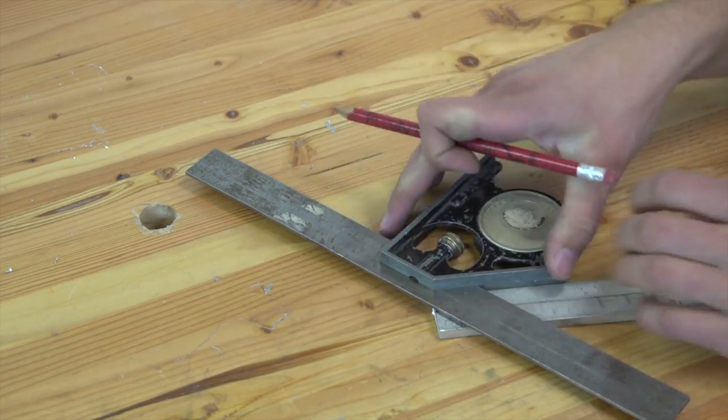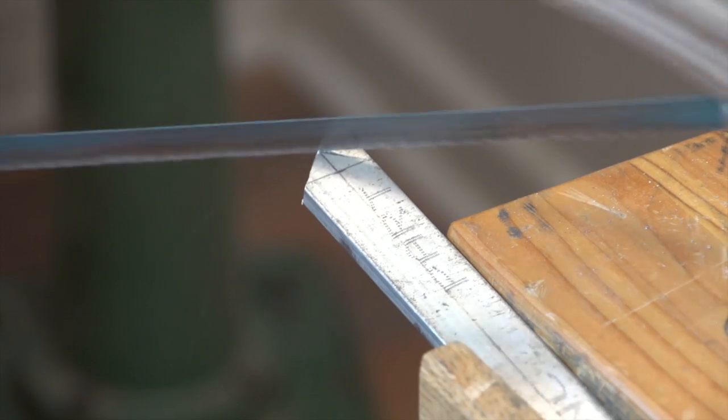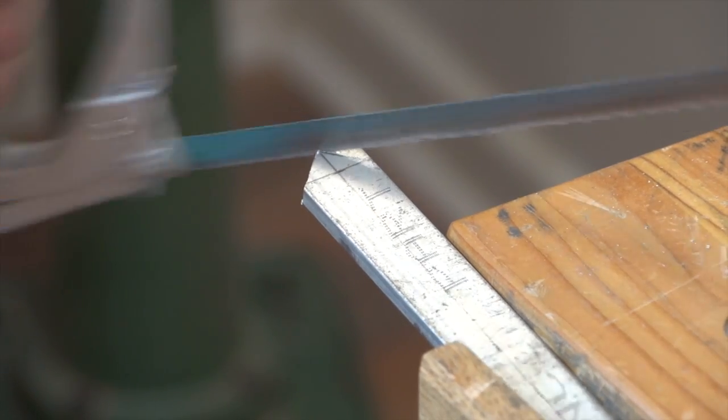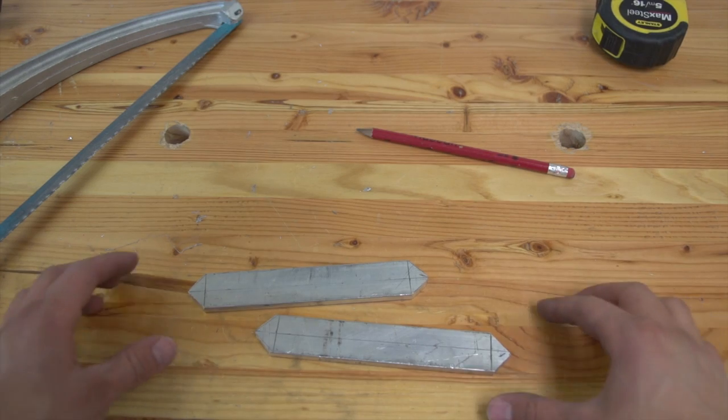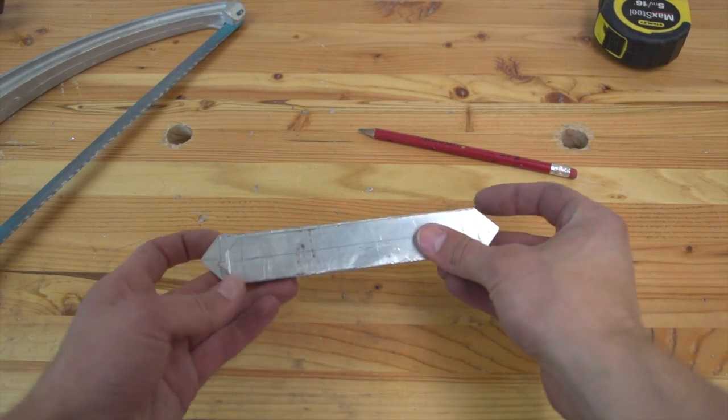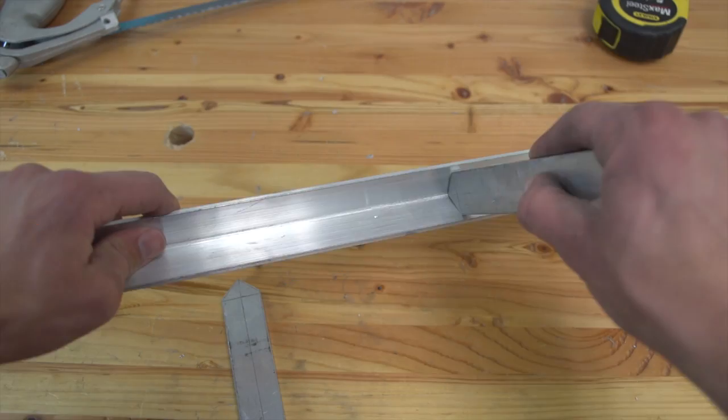Now cut along these diagonals that you just drew, and the end result is a clean 90 degree angle that should fit snug into the angle aluminum. Use the same method on the other 6 and a quarter inch bar. Once both pieces are cut, check to see that the ends are the same distance apart and that they fit snug inside the angle aluminum.